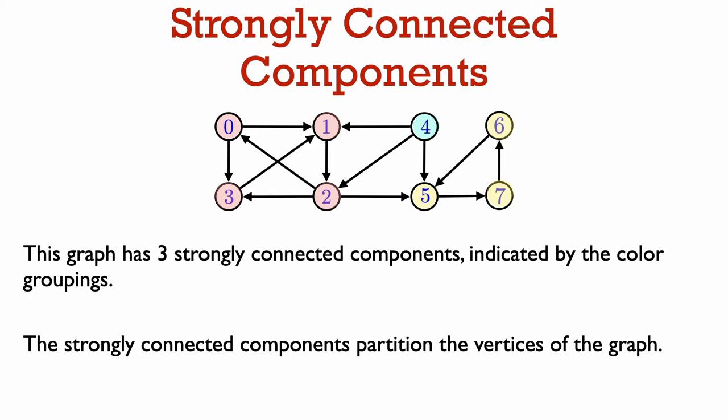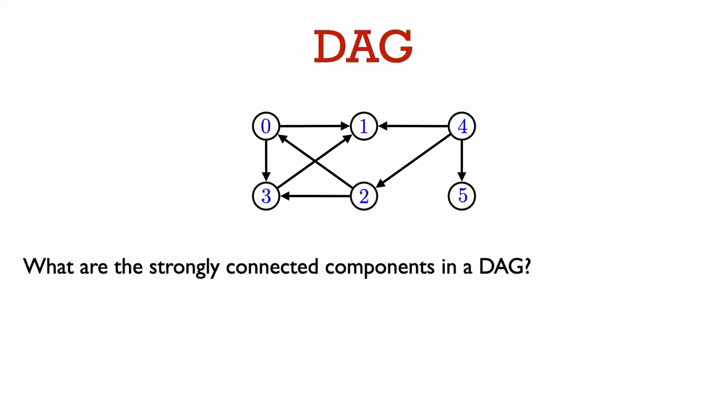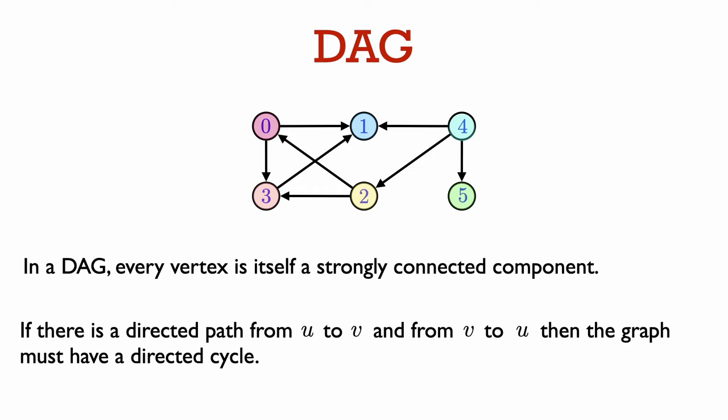Maybe you see from this example the strong role that cycles play in strongly connected components. Let's consider the extreme case of a DAG that has no cycles. What are the strongly connected components? In a DAG, every vertex itself is a strongly connected component. If we had even two vertices u and v that were strongly connected — that is, if there was a path from u to v and a path from v to u — then this would mean the graph would have to have a cycle. But in a DAG we don't have any cycles, so that cannot happen.